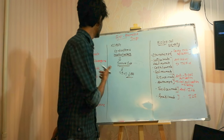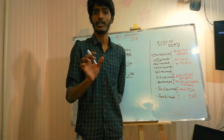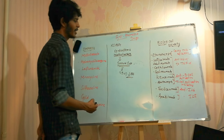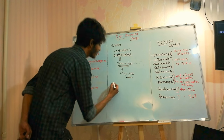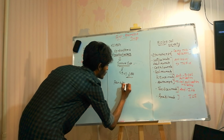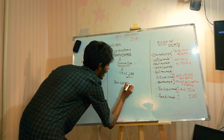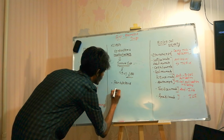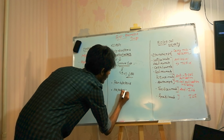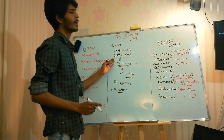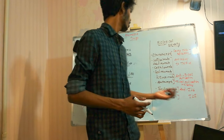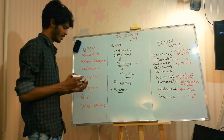Because of the immune suppression it causes, methotrexate produces side effects such as pancytopenia. It is also a hepatotoxic drug, meaning it can cause liver damage. So when giving methotrexate to a patient, you must monitor their liver enzyme levels.